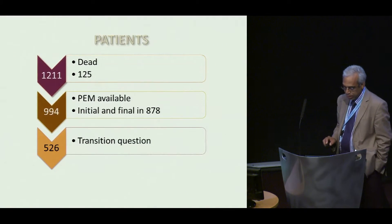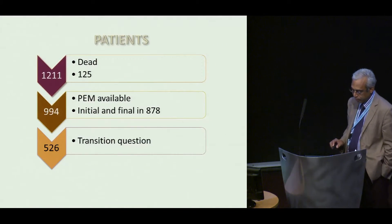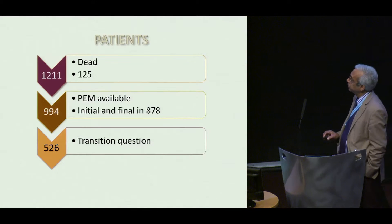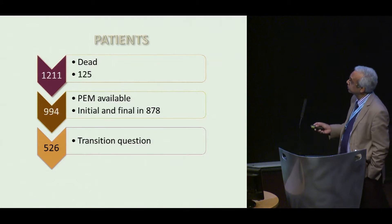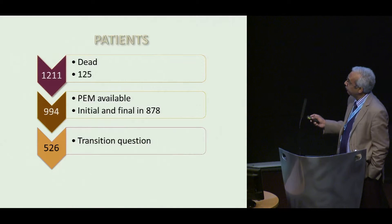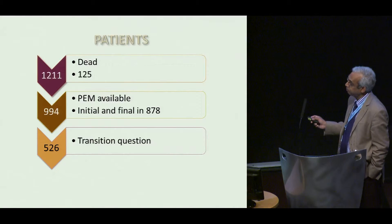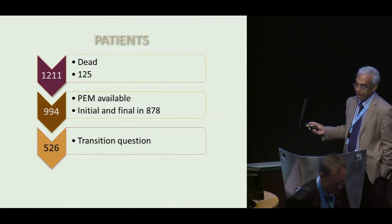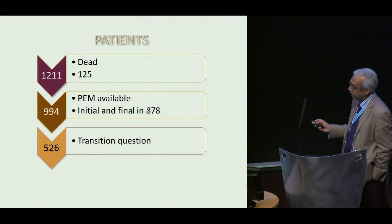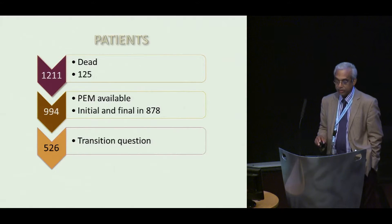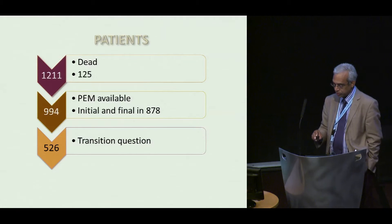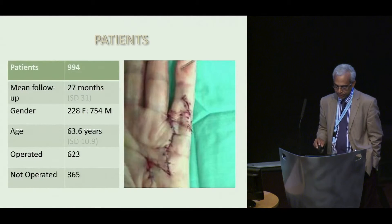What we did was look at 1,200 Dupuytren's contracture patients — these are consecutive patients. 125 of them were dead, and we had the Patient Evaluation Measure available at baseline and at the final review in 878, and we had 526 transition questions, which I'll explain in a minute.